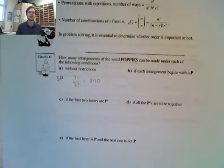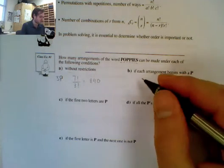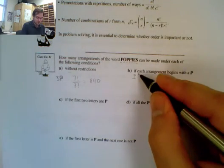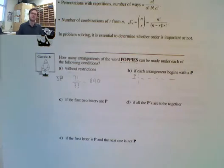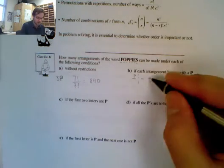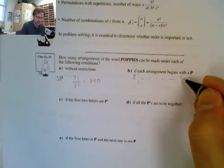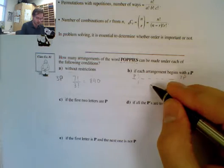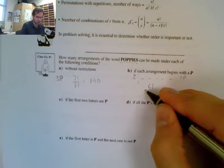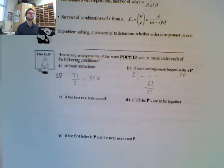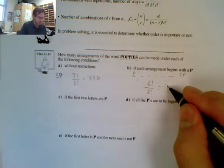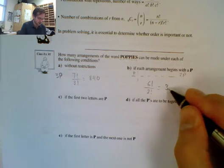Now it says if each arrangement begins with a P. So we must start here with a P. Now we have 6 other letters to choose from, but we have two P's in these here, so we still have a P repeating. So this is only going to be 6 factorial divided by 2 factorial. Since order matters, we're doing permutations or factorials, which gives me a total of 360.